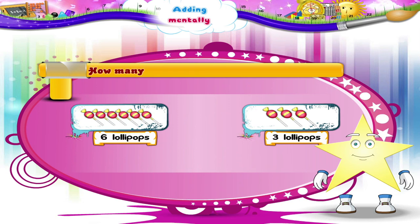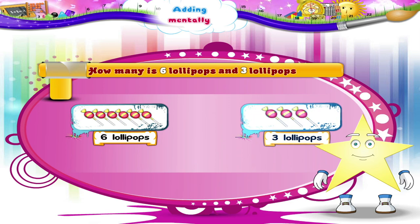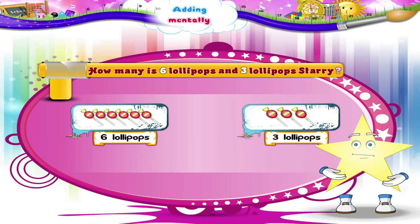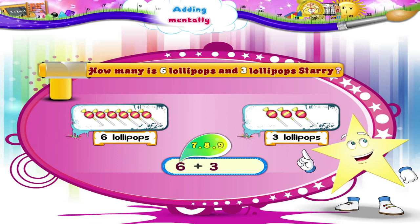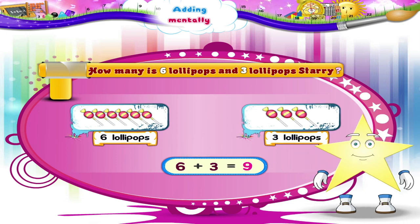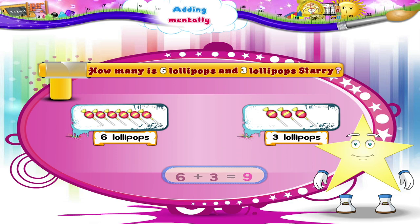Now, how many is 6 lollipops and 3 lollipops, Starry? 6 plus 3 — think: 7, 8, 9. Right! 9 lollipops.